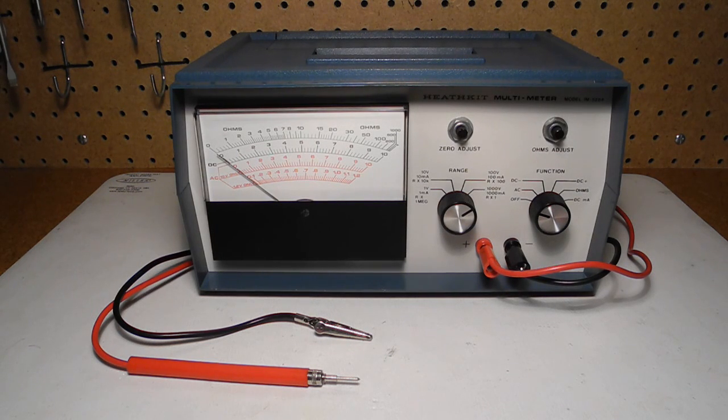In this video, we'll take a look at a piece of vintage Heathkit test equipment, the IM5284 multimeter. I'll discuss the history and features of this instrument, and we'll look at the front panel controls and inside circuitry.